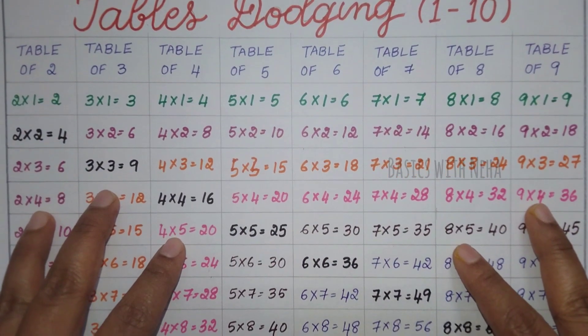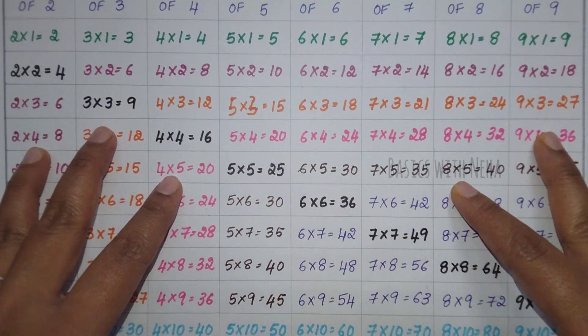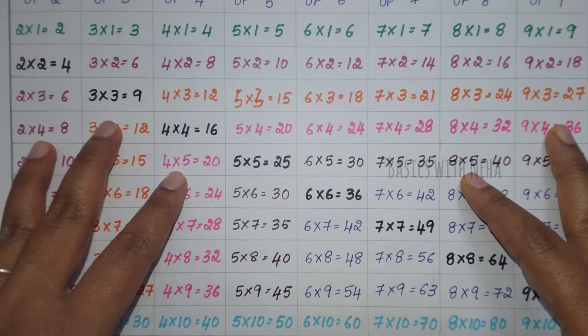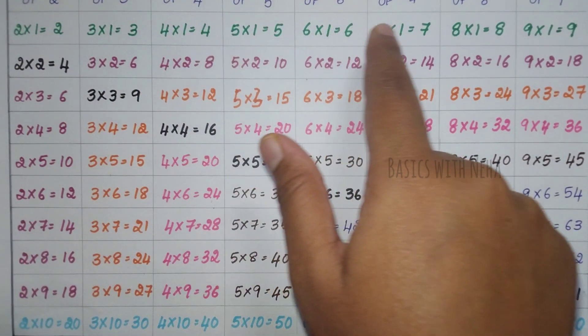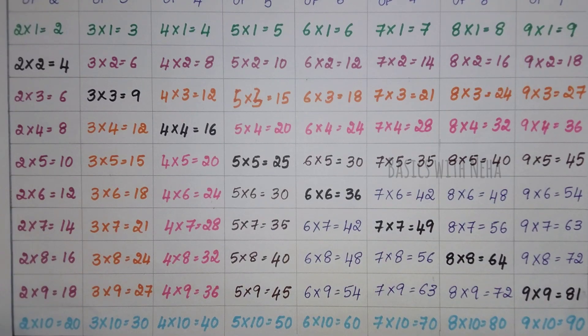Now if you can just see this table properly, whatever you see in the first line, it is one table.